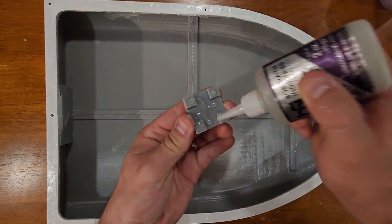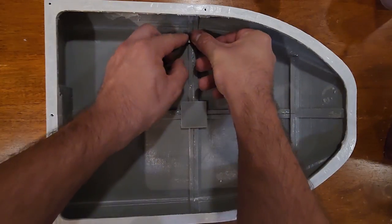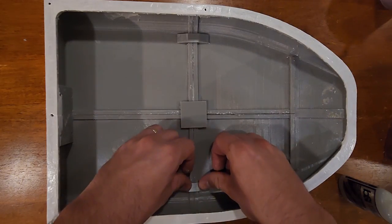I 3D printed some structural straps that I glued between the sections of the hull to keep it together, since I didn't trust the integrity of only the thin edges being glued.